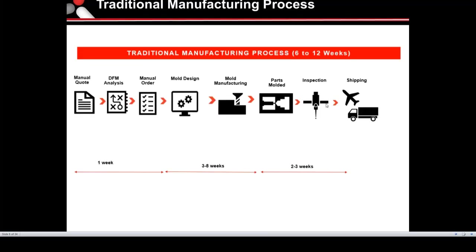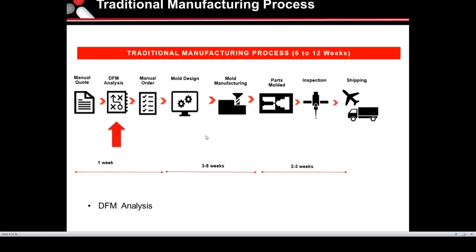Here's a visual of the traditional manufacturing process. On average, you're looking at six to twelve weeks from getting a quote to getting parts in hand. Submitting a part for quote, the traditional manufacturer gets the part print, reviews with a team of individuals, and provides a manual quote while doing a DFM analysis and providing any feedback on issues.